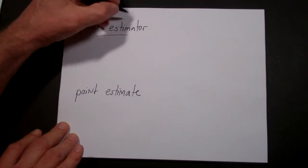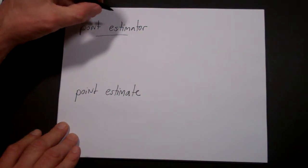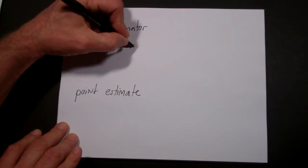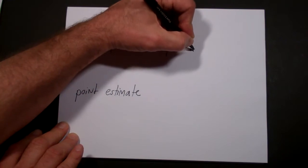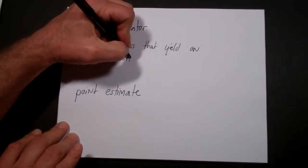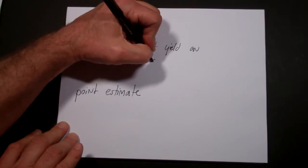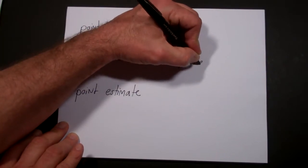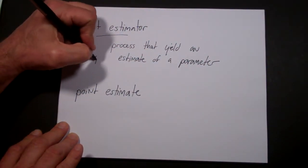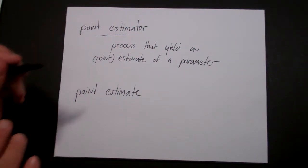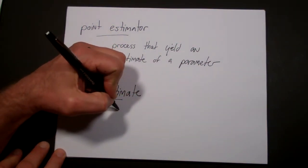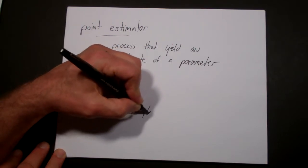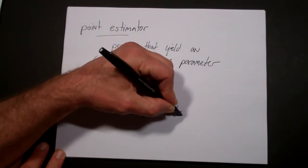The idea of a point estimator — remember, an estimator is a process. So a point estimator is simply a process that will yield an estimate of a parameter. The key issue is what makes it a 'point' is that you get a number. For example, if you were coming up with a process to estimate average income, you would get a single number, which would be an estimate of the average income. A point estimate is just a single number which is an estimate of a population parameter.